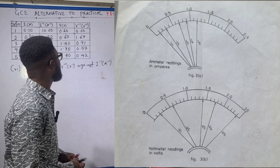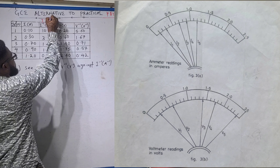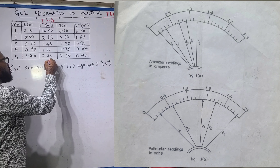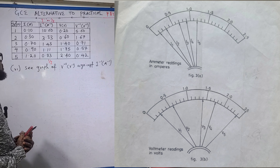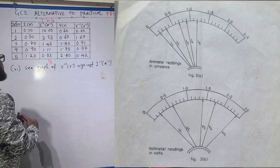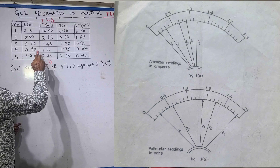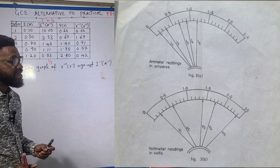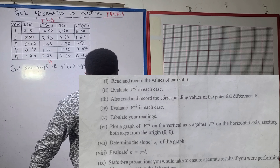We are looking for i raised to power minus one, which is 1 over i. So: 1 divided by 0.10 = 10; 1 divided by 0.30 = 3.33; 1 divided by 0.70 = 1.43; 1 divided by 0.90 = 1.21; 1 divided by 1.10 = 0.83. That completes the inverse current values.